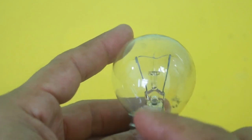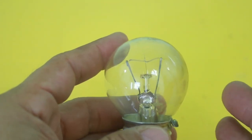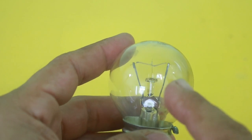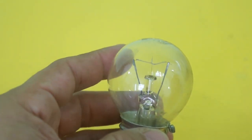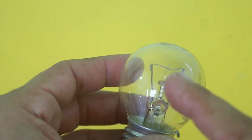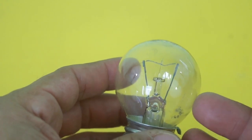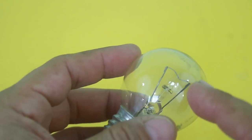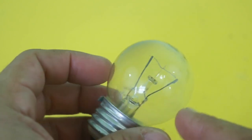Also, inside the bulb there is a partial vacuum and some inert gas is inserted. This to prevent oxidation of the filament. Without oxygen, the filament cannot burn and it will last longer.